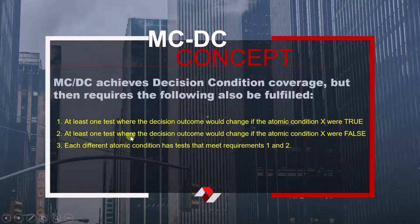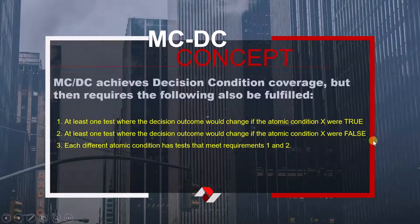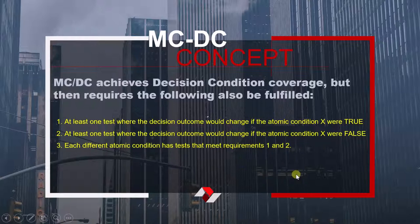Similarly, at least one test case shall exist where the outcome will change if the atomic condition were false. So for each atomic condition, we have to make it true once and false once. Whenever we make it true, it should influence the decision, and similarly, whenever we make it false, it should also influence the decision. The last condition is that each different atomic condition has tests that meet requirements 1 and 2 — for all atomic conditions, making them true and false must influence the decision.